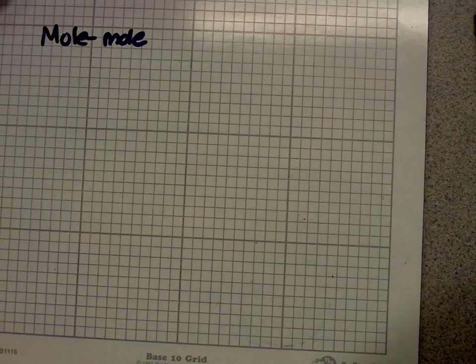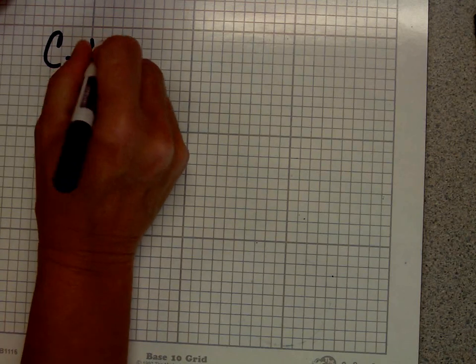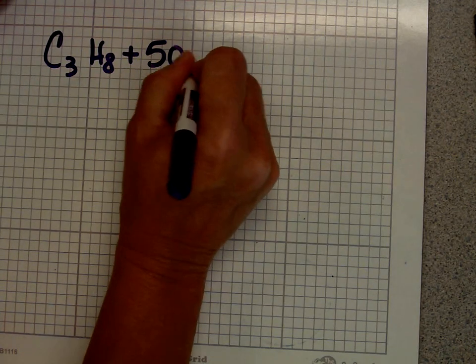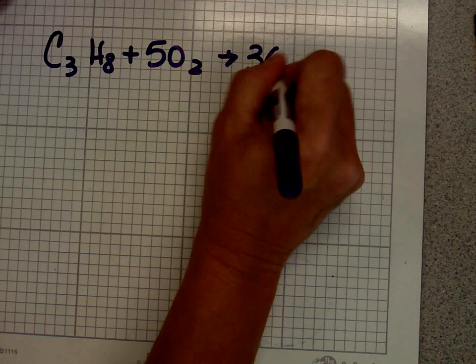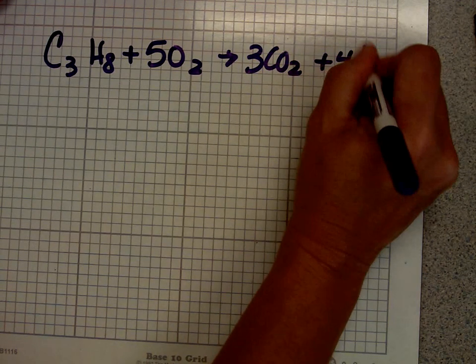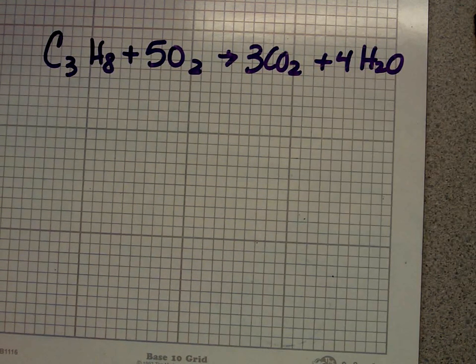First thing when you're doing a problem with mole-mole relationships is you need to have an equation and you need to make sure that it's balanced. Here's our equation for today: C3H8 plus 5O2 yields 3CO2 and 4H2O. And is it balanced?